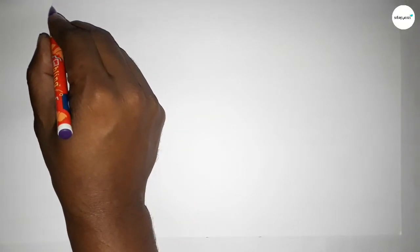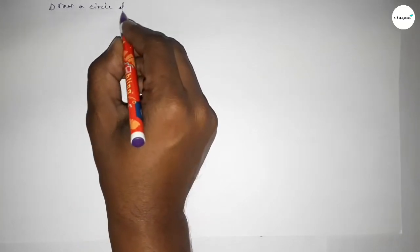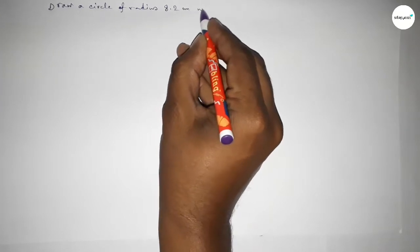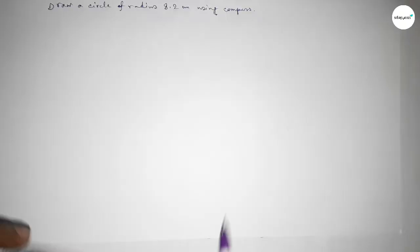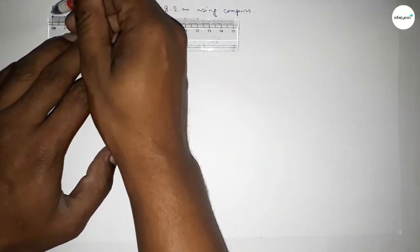Hi everyone, welcome to SSR classes. Today in this video we have to draw a circle of radius 8.2 centimeters by using compass. So let's start the video. First of all, drawing here the radius 8.2 centimeters.